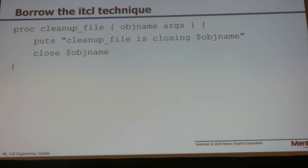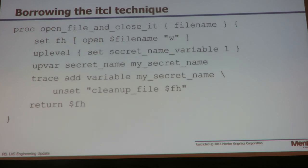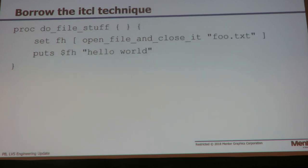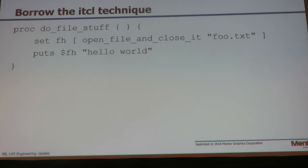You create the same cleanup thing as before. I'm going to create a proc that will open a file and close it in the scope of the thing that called me. I'll create a function that opens my file and sets it up to delete itself when it goes out of scope. I open the file, work in the calling process's space, create a secret variable up there — the iTcl_local_F1 we saw before — make sure it's created, trace it up there as well so it calls my cleanup-the-file. Then I return the file handle and the user can use it, write to it, and doesn't have to close it. It'll go away when the proc returns.